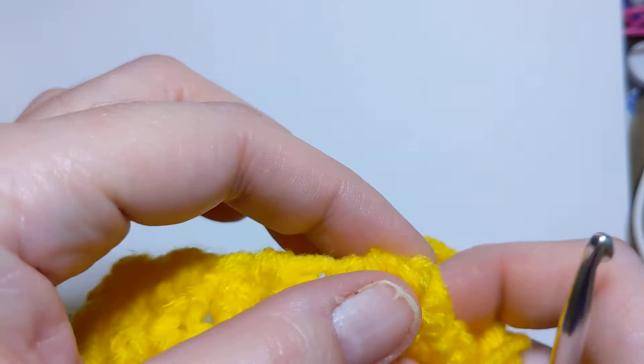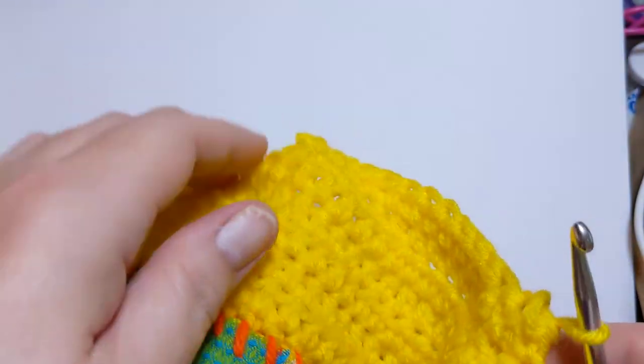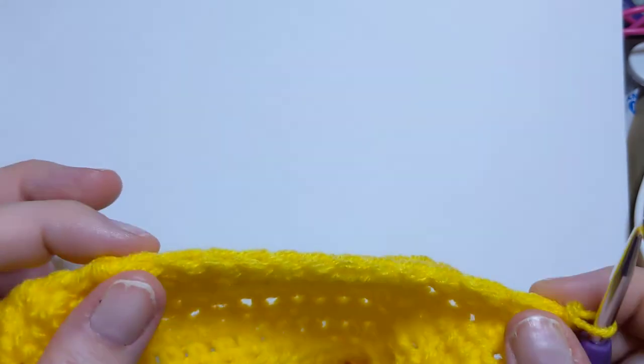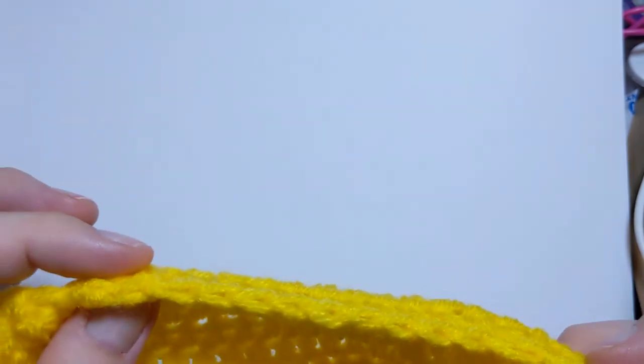When I last left you, we were down here doing our decreases, two decreases on each side for each row. And I told you we're going to end up with nine stitches across the top by the time we get done. I wanted to stop here and show you what is happening with mine.